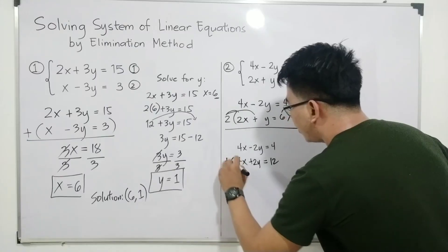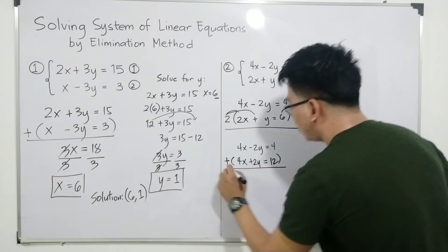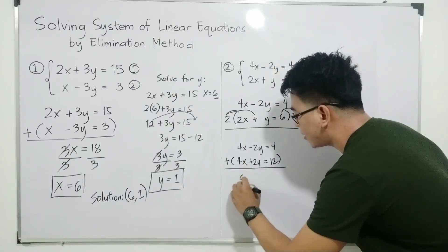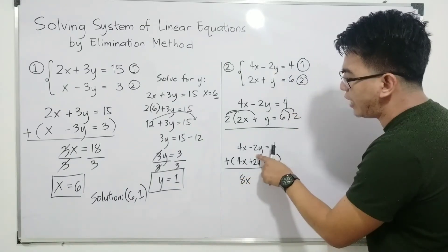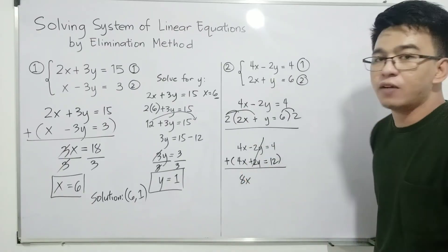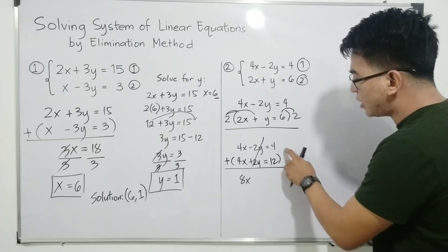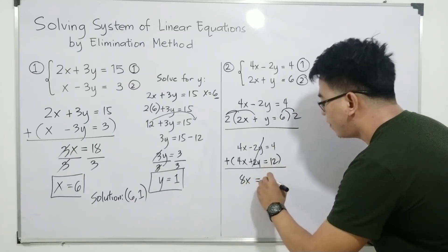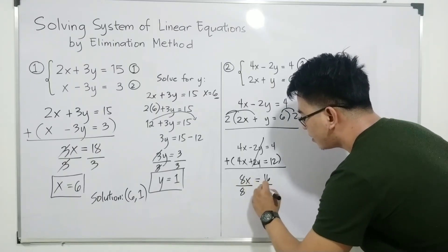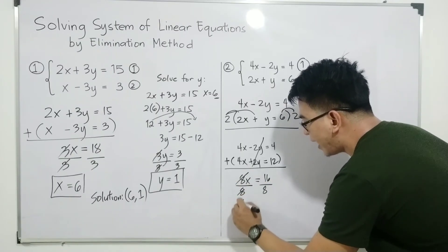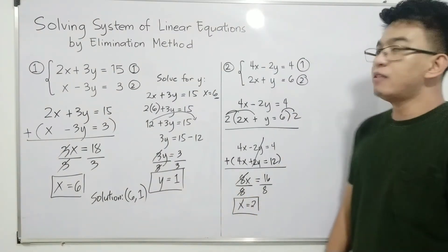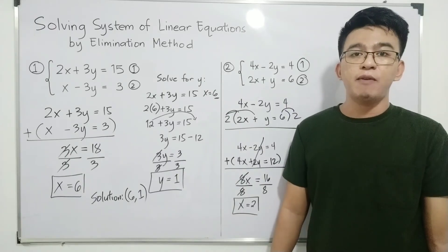We are now ready to add the two equations. 4x plus 4x gives us 8x. Negative 2y plus 2y equals 0, so we have eliminated the variable y. For the constants, 4 plus 12 equals 16, giving us 8x equals 16. Dividing by 8, we get x equals 2. This is the value of x in the second system of linear equations.